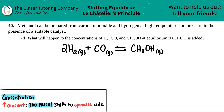Number 40. Methanol can be prepared from carbon monoxide and hydrogen at high temperature and pressure in the presence of a suitable catalyst. Letter D asks: what will happen to the concentrations of H2, CO, and CH3OH at equilibrium if CH3OH is added? In this case, we're adding methanol, aka the CH3OH.